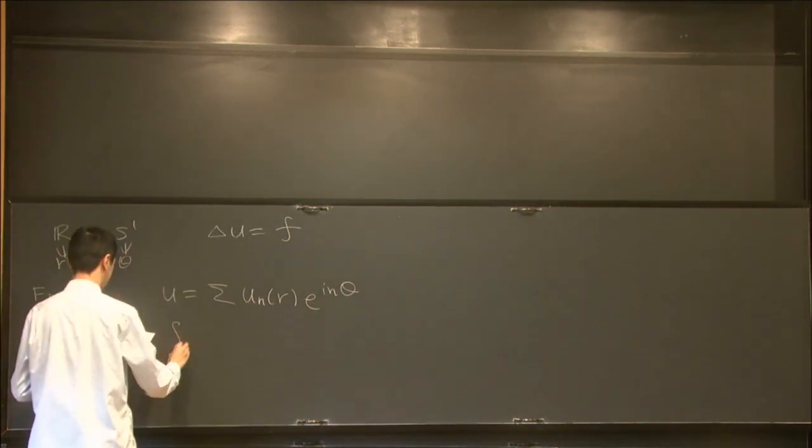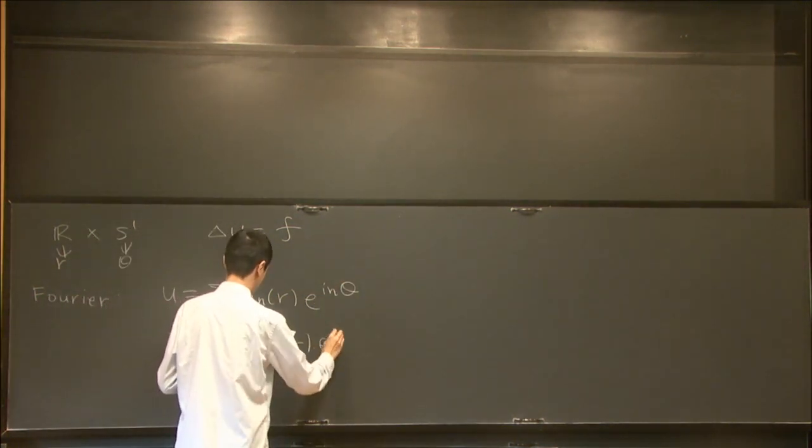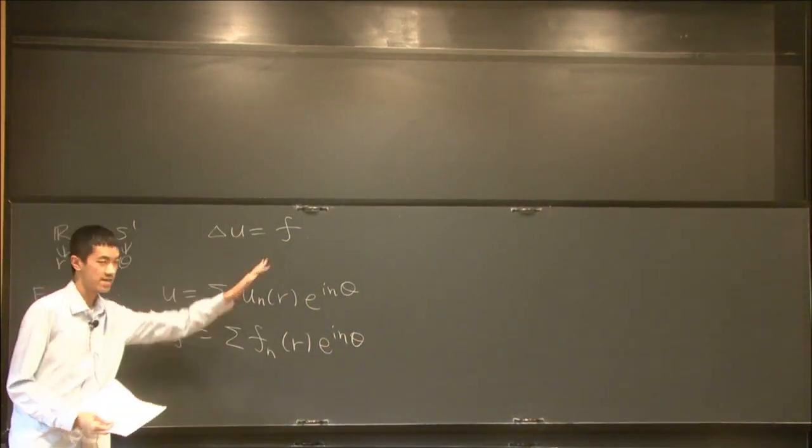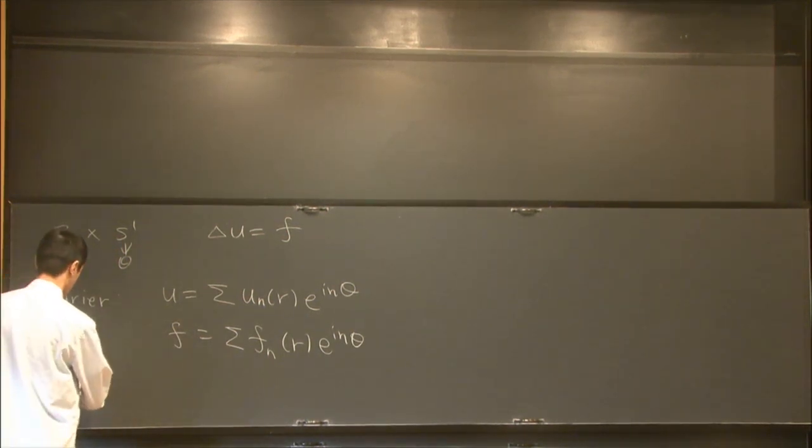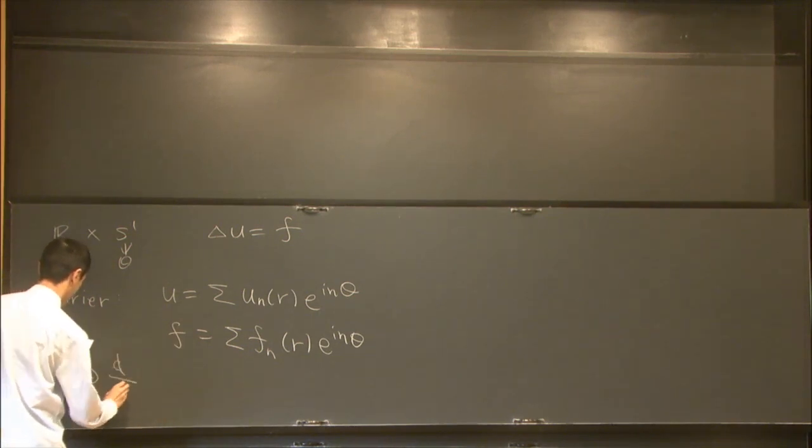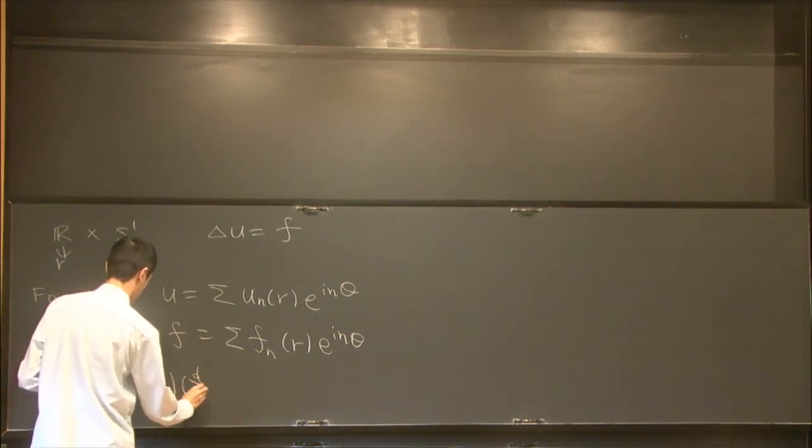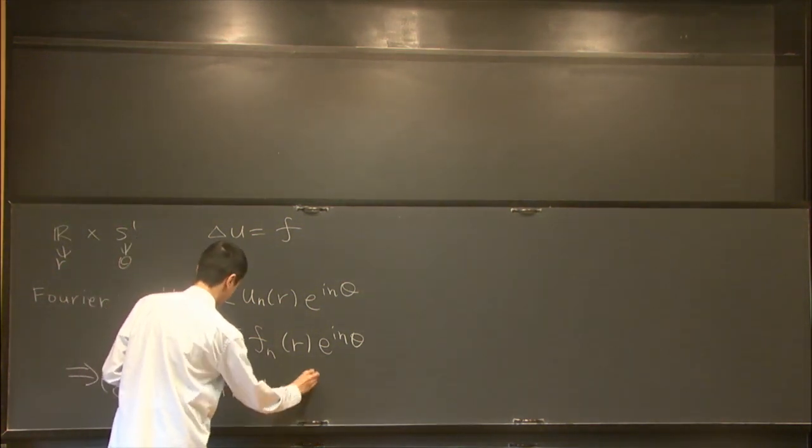And write F as sum of F_n(r)e^{inθ}. Then this complicated partial differential equation becomes an ordinary differential equation, which is (d/dt)(d/dr - n)(d/dr + n)U_n equal to F_n.